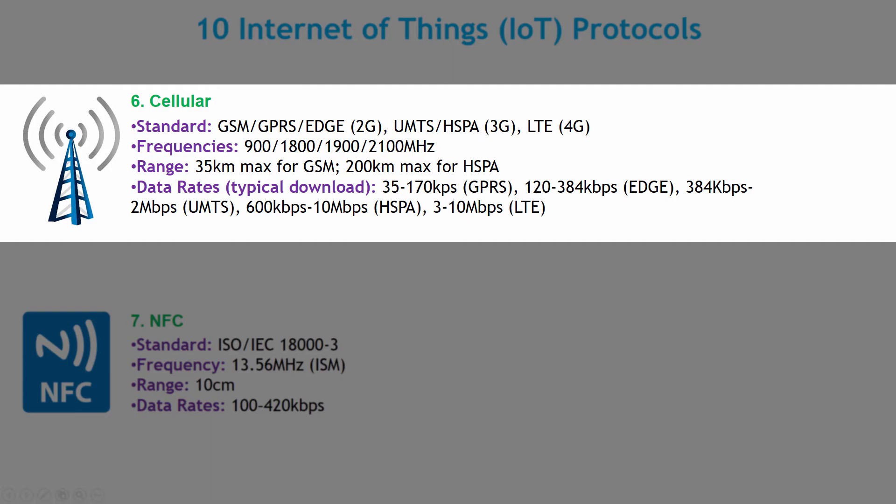Cellular is another choice. IoT applications that require operation over longer distances can take advantage of GSM, 3G, 4G, or 5G cellular communication capability. While cellular is clearly capable of sending high quantities of data — especially for 4G — the expense and power consumption will be too high for many applications. The frequency ranges used in cellular are 900 MHz, 1800, 1900, and 2100 MHz. Range goes from 35 km for GSM and up to 200 km for HSPA. Data rates vary from kbps to Mbps — around 35 kbps for GPRS and 3–10 Mbps for LTE 4G.